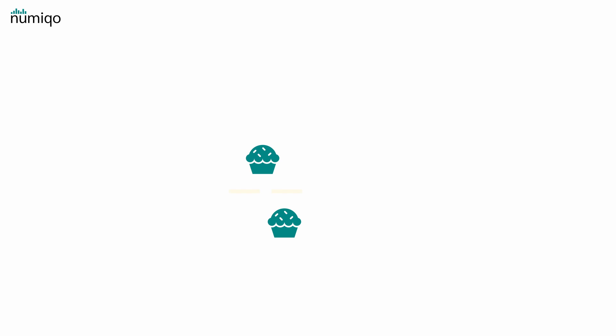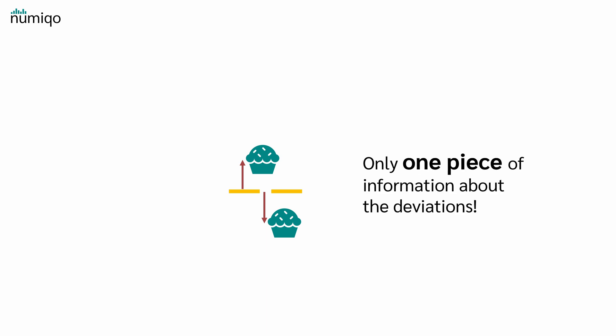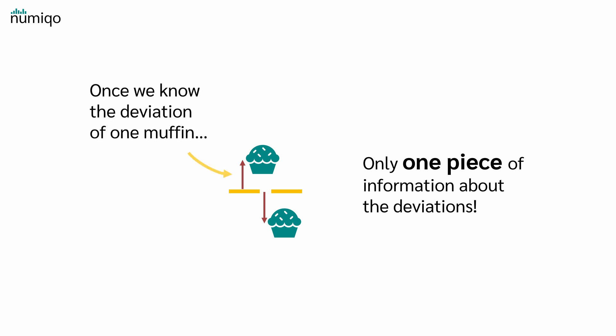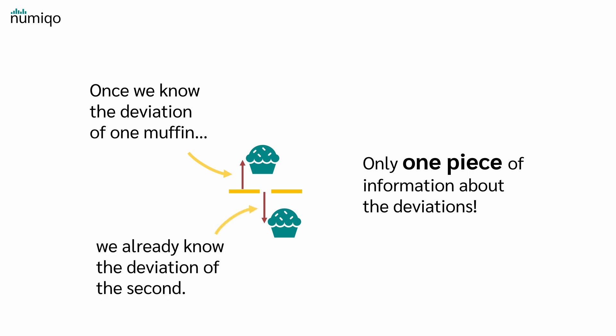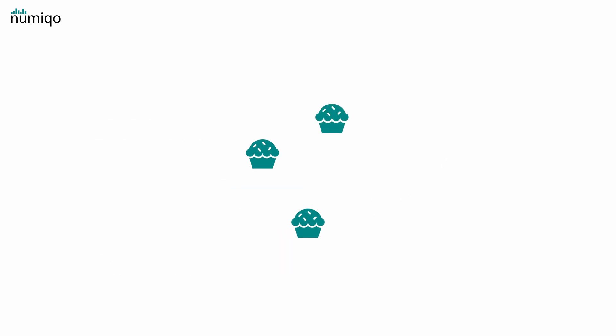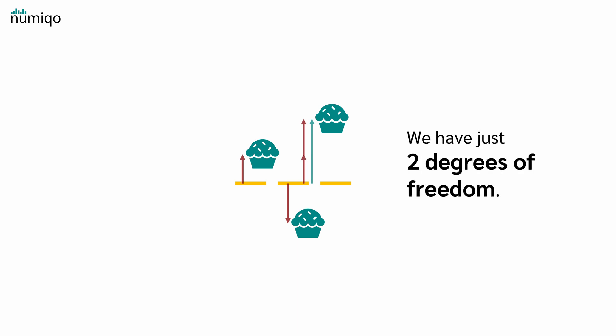If we have two muffins and we calculate the sample mean, the mean is exactly in the middle of the two. Basically, we have only one piece of information about the deviations, because once we know the deviation of one muffin, we already know the deviation of the second one. The same idea with three muffins: after we calculate the sample mean, we essentially have only two pieces of information about the deviations. If we know the first and second deviations, we also know the third. So we have just two degrees of freedom.